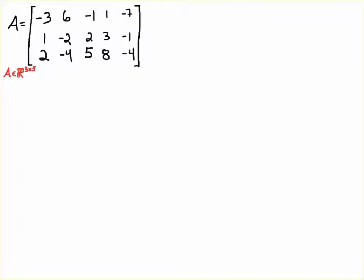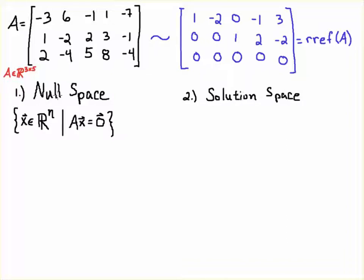Hello students. In this video we're going to determine the null space of a matrix and relate that null space to the solution space. The null space is defined as the vectors in R^n, where n is the number of columns, such that these vectors when multiplied by the matrix give you the zero vector.